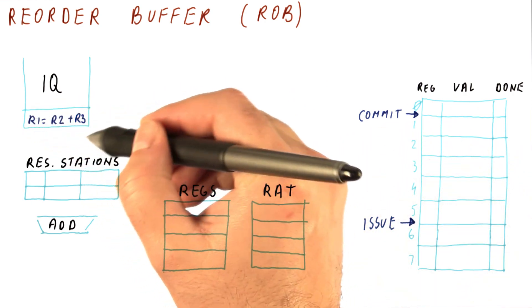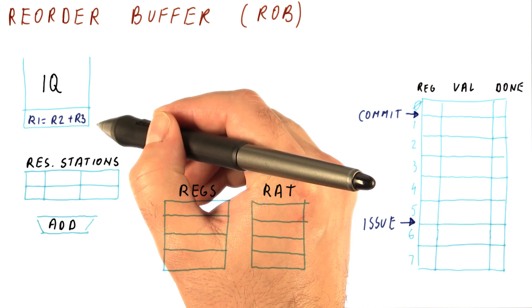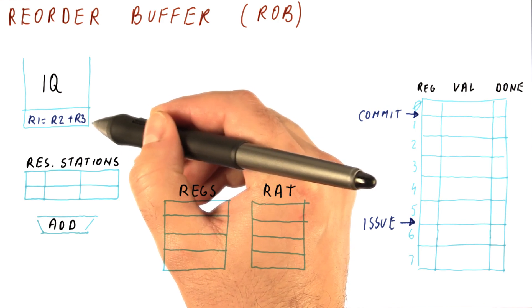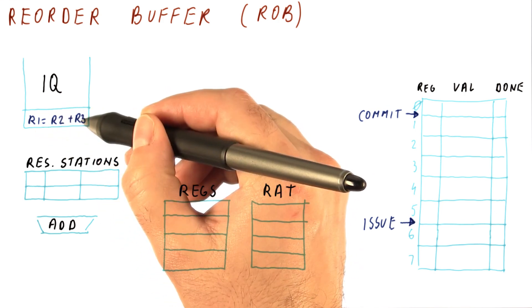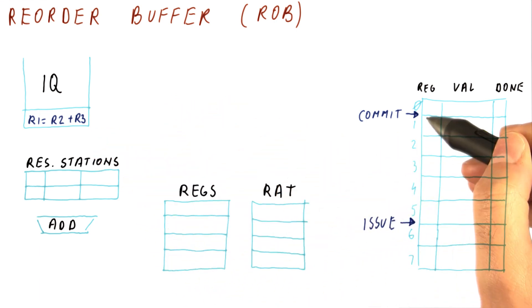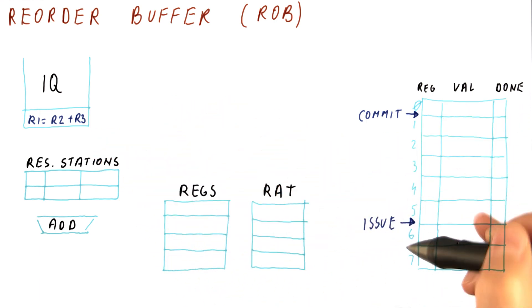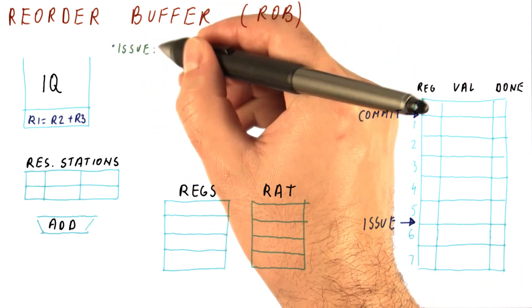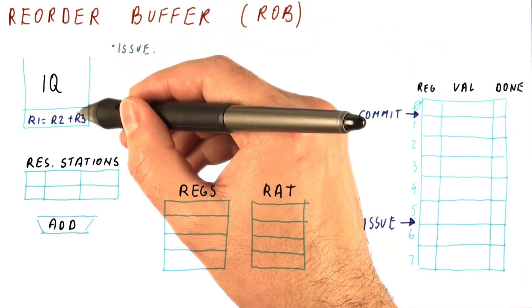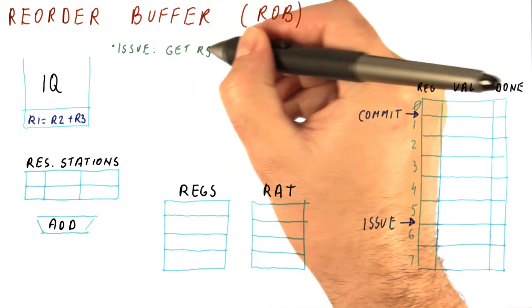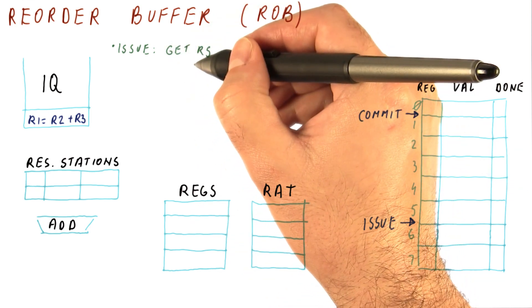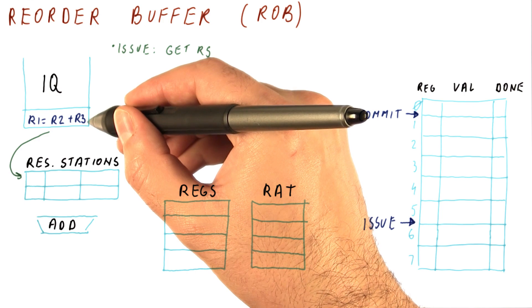Let's say that we have this add instruction here in the instruction queue. So now we want to see what happens once we start issuing this all the way to once we eventually commit this instruction in a processor that now has a reorder buffer. So let's first see what happens on instruction issue. As before, when we didn't have the reorder buffer, we get a free reservation station and we put our instruction in it.